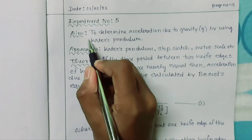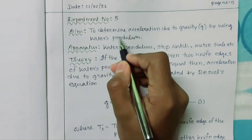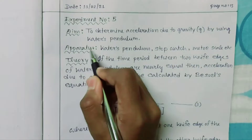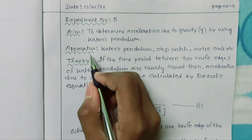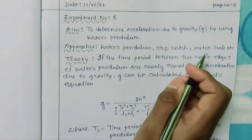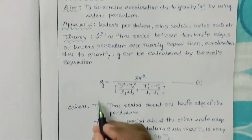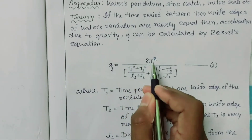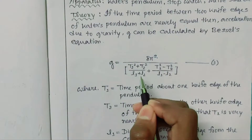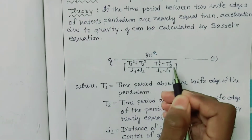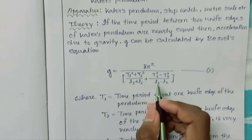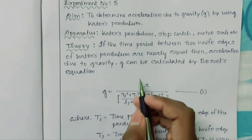This is the aim of this experiment: to determine acceleration due to gravity by using Kater's pendulum. The required apparatus is the Kater's pendulum, stopwatch, and meter scale. With the help of the formula g = 8π² × [(T1² + T2²)/(L1 + L2) + (T1² − T2²)/(L1 − L2)], we find the acceleration due to gravity.